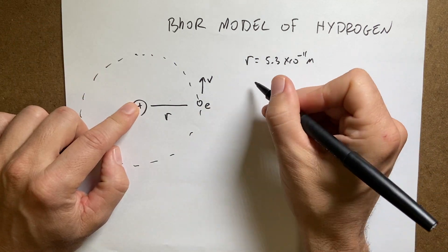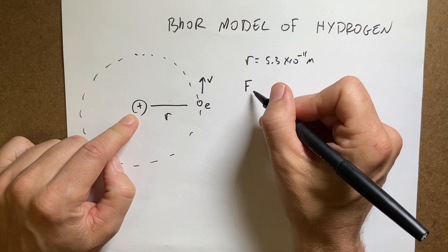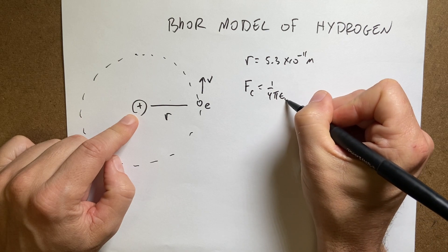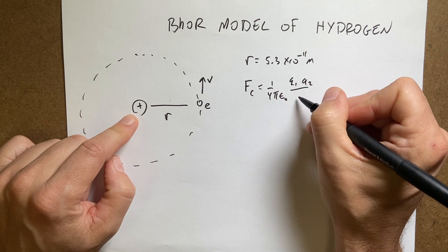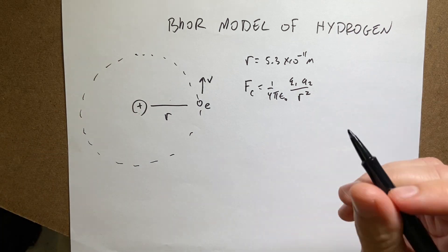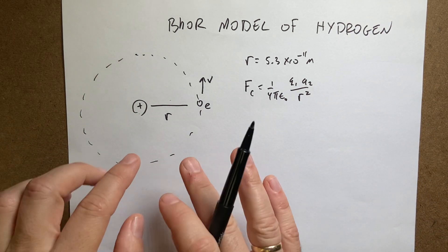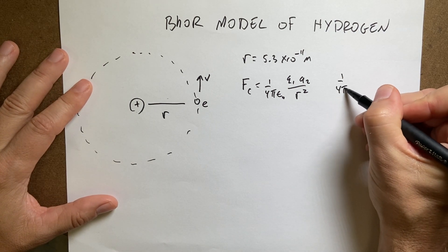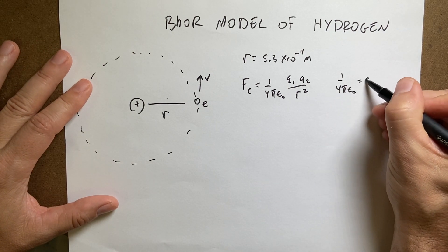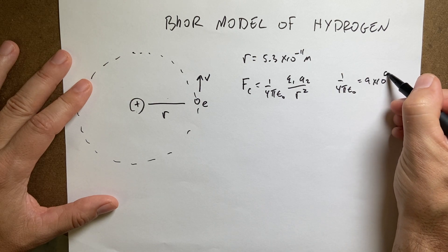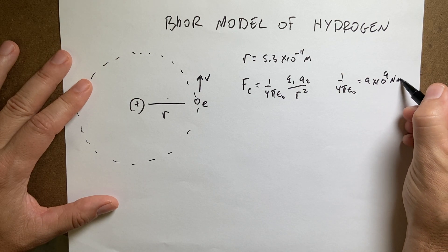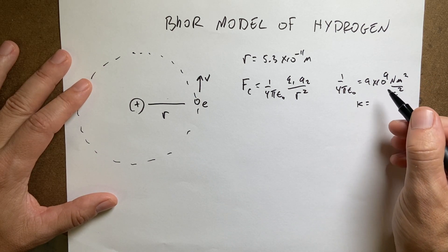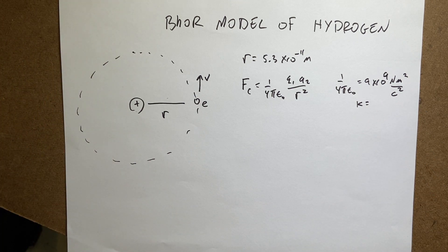The Coulomb force — the scalar magnitude — is F = (1/4πε₀)(q₁q₂/r²). I don't need the vector form here since I just want the magnitude. The constant 1/4πε₀ is 9×10⁹ N·m²/C², which some people call k, just to make it simpler to write.